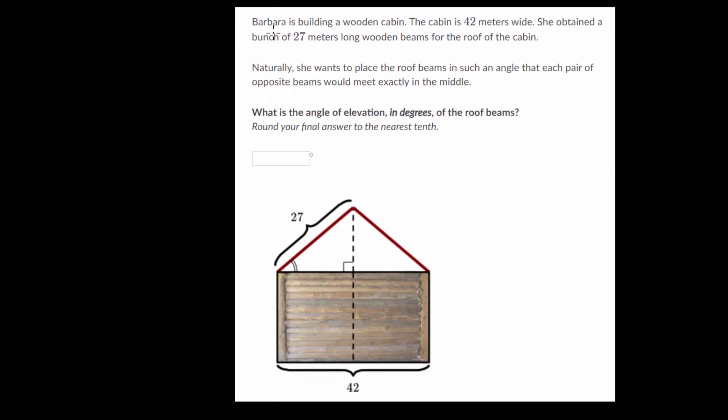And in this one, we have that Barbara is building a wooden cabin. The cabin is 42 meters wide. So that's what they give us down here. She obtained a bunch of 27 meter long wooden beams for the roof of the cabin. So that's these two red beams here.